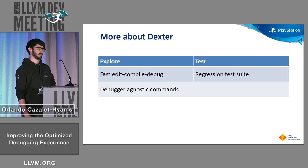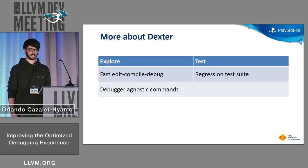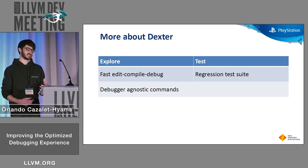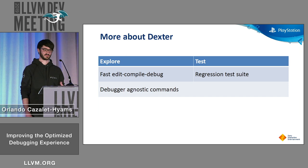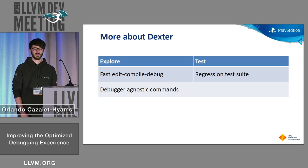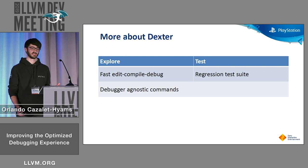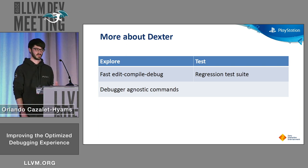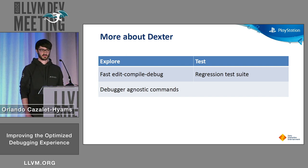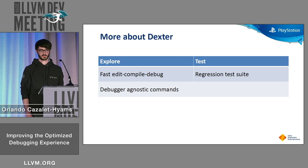Just before I wrap up, I want to talk a bit more about Dexter itself. It helps us with this exploratory testing because it gives us a fast edit, compile, debug cycle — we can tweak test cases and we don't have to manually step through the program again to find weird behavior, we just get a report. Debugger agnostic commands means we can swap out debuggers very easily and compare behavior. Also separately, but just as importantly, if we keep all of our interesting test cases, we get a debug info regression test suite which is resilient to the way that debug info is encoded.